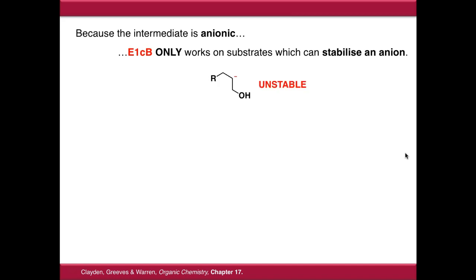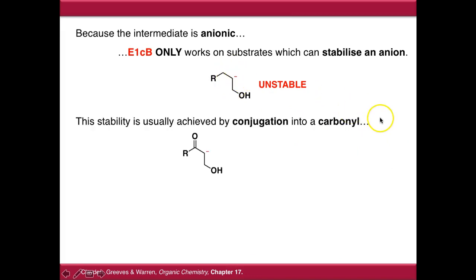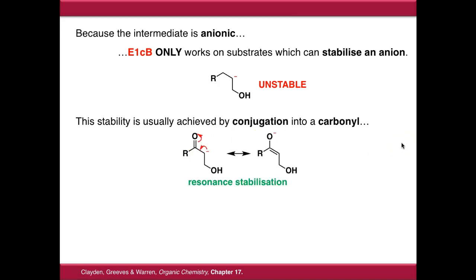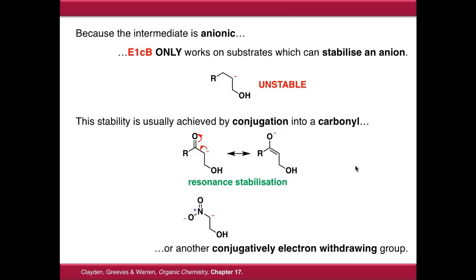This substrate as drawn is not a particularly stable anion. If we add a group adjacent to it which the anion can conjugate with — a conjugative electron withdrawing group — we can draw resonance forms where the anion is delocalized across two different atoms, one of which is oxygen, which is happy to bear a negative charge because it is so electronegative. This resonance stabilisation makes the anion quite stable, and these are the substrates on which E1CB reactions occur. About 90% of the time that group will be a carbonyl, but it also works for other conjugative electron withdrawing groups such as nitro.